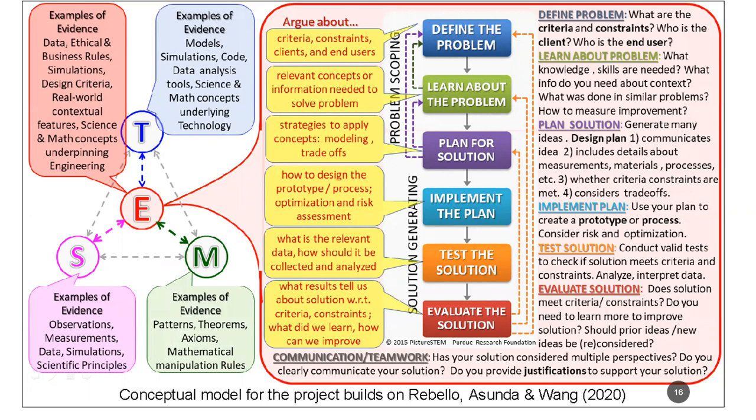The model addresses an important issue in argumentation — the underspecified nature of evidence. On the right-hand side is the engineering design process itself, going from problem scoping through solution generation. The visualization looks linear, but it's a very cyclic process: even at evaluation, you could circle back to any earlier key step. Maybe you've tested a solution, you're evaluating it, but you recognize you need to further understand the problem, so you return to problem scoping or implementation.